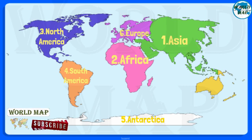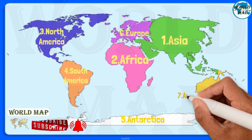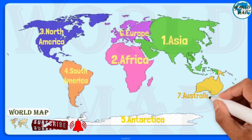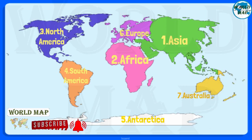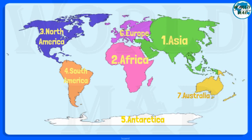Number 7. Australia. Australia is the smallest continent in the world and is the flattest and second driest after Antarctica. It is also the second least populated after Antarctica. It comprises 14 countries.